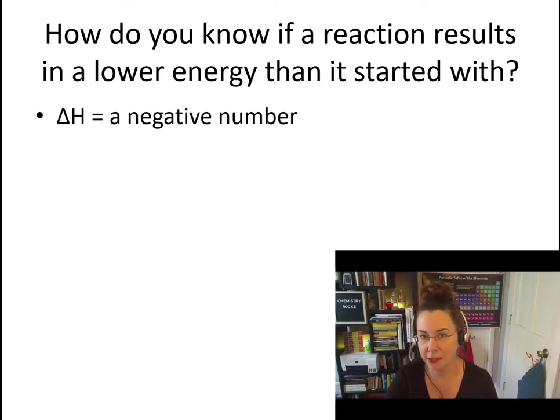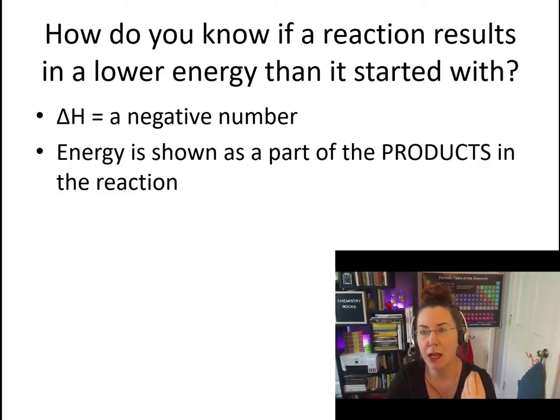Well, you look at the delta H. Remember, delta H is your heat of reaction. It's also your enthalpy. If your delta H is a negative number, you know there has been a release of energy and that is an exothermic system, or if energy is shown as a part of the products in your chemical reaction.